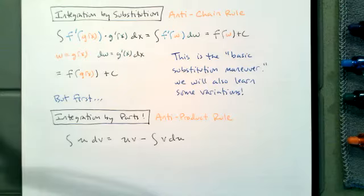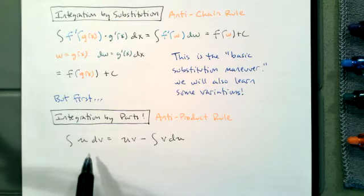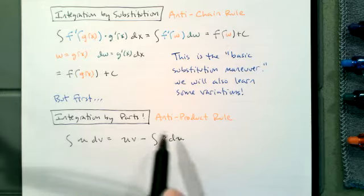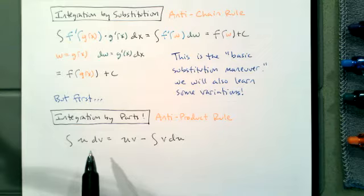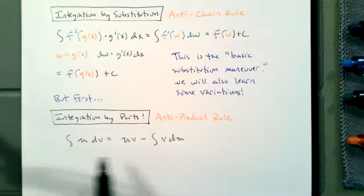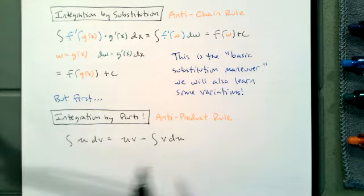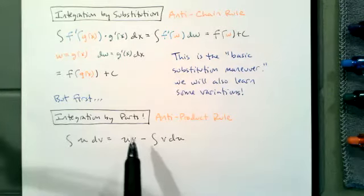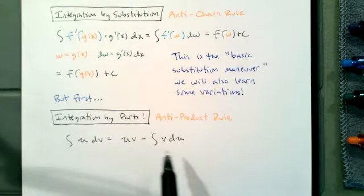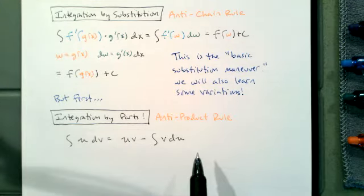Let's talk about how integration by parts is going to work. Over here on the left is the integral that you've been given, and over here on the right is how you can integrate it. One of the features is that there's another integral on the right. The idea is that we take an integral we don't know how to do, break off the UV piece, and then we have a secondary integral.